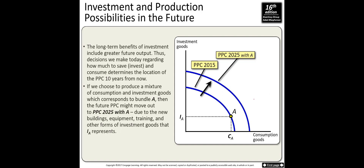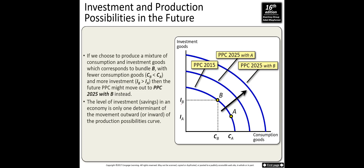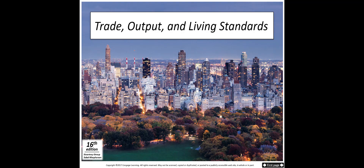Investment also increases the production possibility curve, but for a future period. If you invest more today — say at point A versus a higher investment level — the PPC shifts outward more in the future. When you save more today, banks use those savings as loans to businesses that expand factories and create new jobs. More jobs mean more income, which increases the production possibility curve: more savings leads to more investment and greater future output.